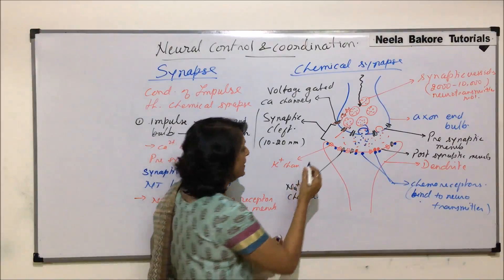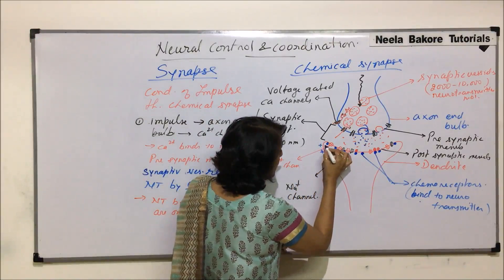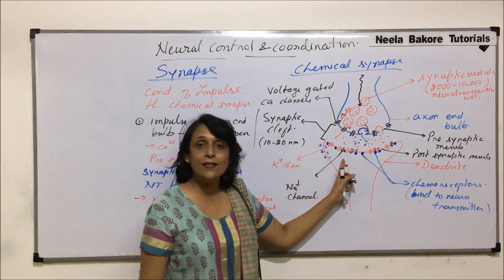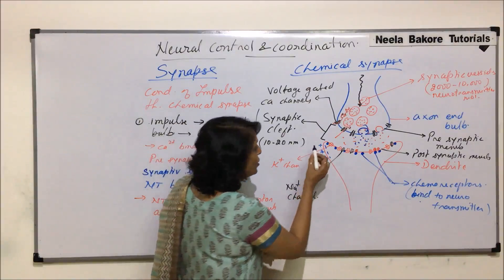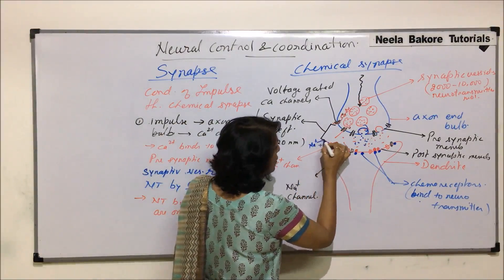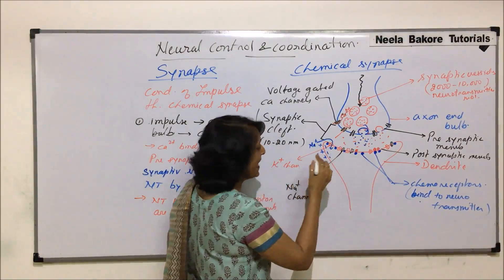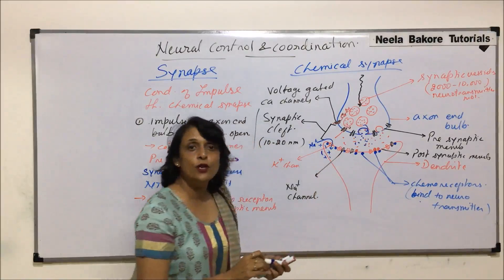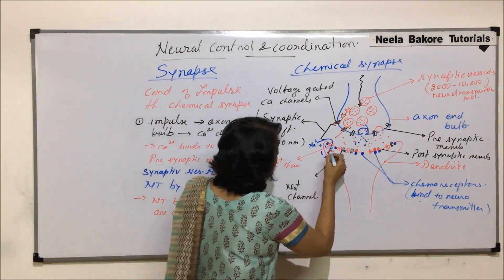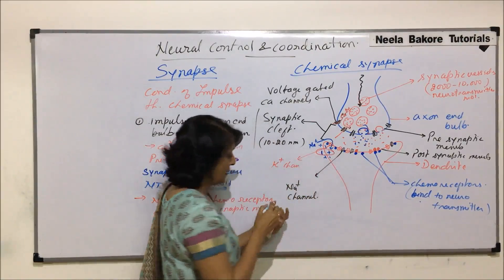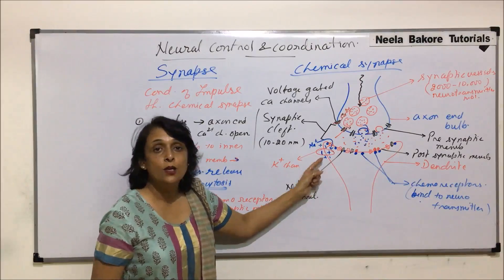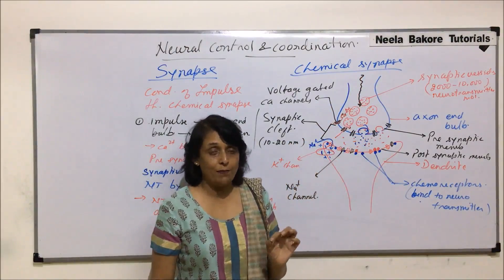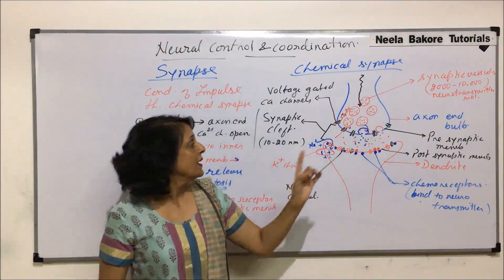We have to remember that the outer membrane is electropositive and the inner side is electronegative. As soon as the membrane permeability changes, sodium ions move in. As soon as sodium ions move in, the inner side becomes electropositive and the outer becomes electronegative — that means the impulse has been generated here.